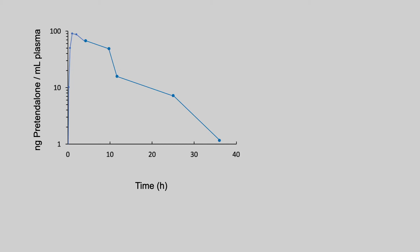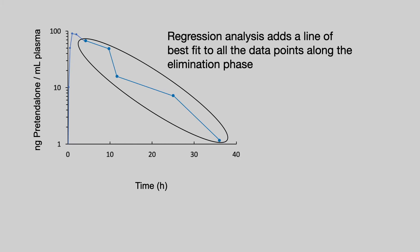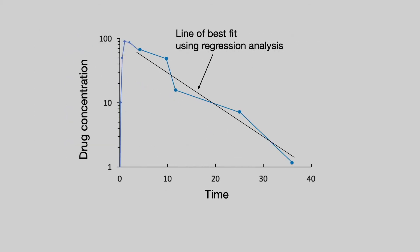So faced with data like this, probably the best approach is to use regression analysis to add a line of best fit to all the data points along the elimination phase. And that's what I've done here. That is the line of best fit using regression analysis.